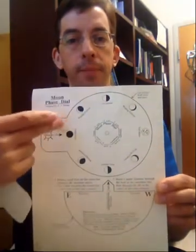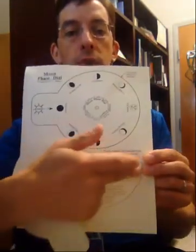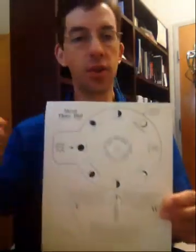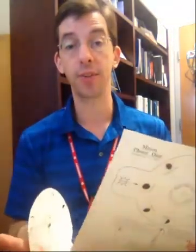And it's just two pieces. This piece, which you'll cut out around the black line, and then this bottom piece, which you'll cut around the black line. And then you just attach them together with a paper fastener, and then you've got yourself a moon phase dial. And it looks like this.